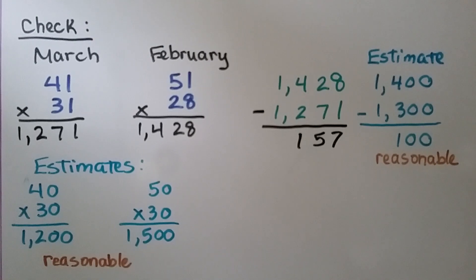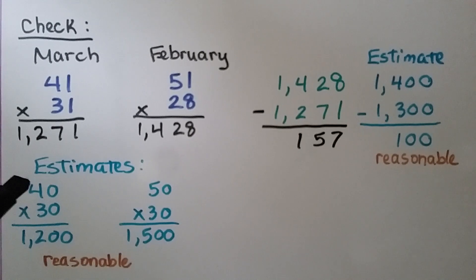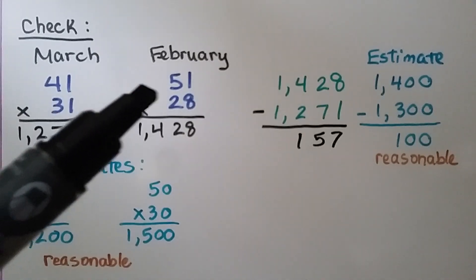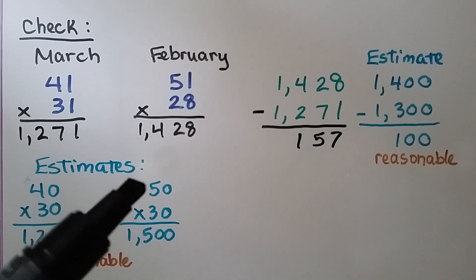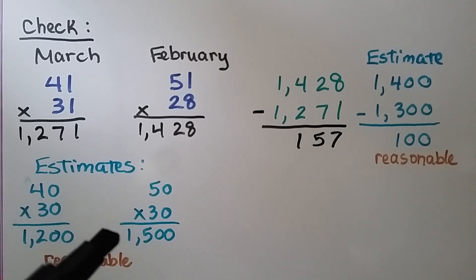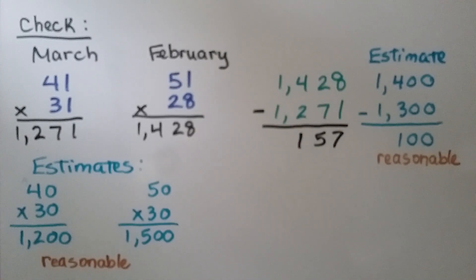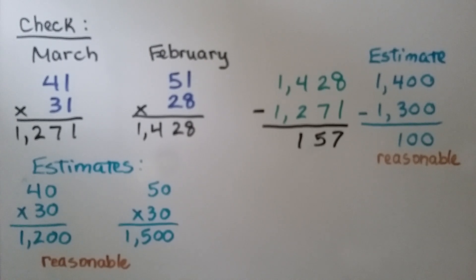We can check our answer. For March, 41 times 31 estimates to 40 times 30, which is 1,200 — that's reasonable and close to our answer. For February, 51 times 28 estimates to 50 times 30, which is 1,500 — also reasonable. We can also estimate the subtraction: 1,428 is about 1,400, and 1,271 is about 1,300. Subtracting gives about 100, which is reasonable and close to our answer of 157.